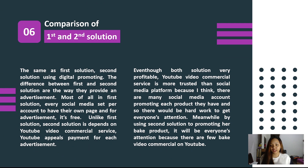The comparison of the first and second solution: both solutions use digital promoting. The difference between the first and second solution is the way they provide an advertisement. In the first solution, every social media account has its own page and advertisement is free. Unlike the first solution, the second solution depends on YouTube video commercial service, which requires paid money for each advertisement. Even though the first solution is very profitable, YouTube video commercial service is more trusted than social media platforms because there are many social media accounts promoting products, making it harder to get everyone's attention. Meanwhile, by using the second solution, it will get everyone's attention because there are fewer video commercials on YouTube.